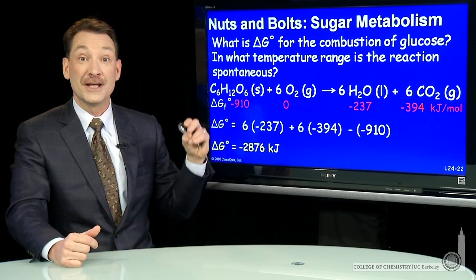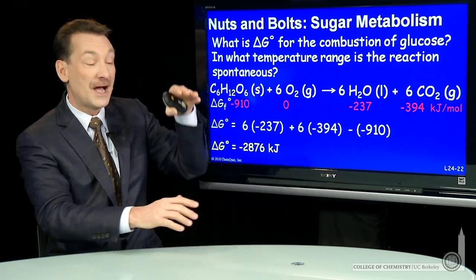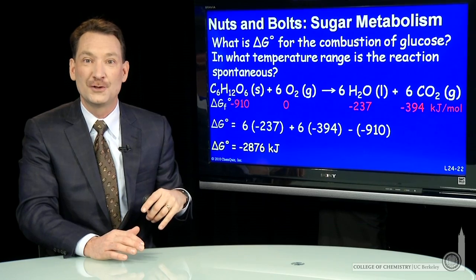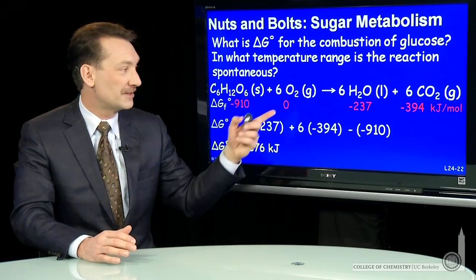So indeed, this is a very spontaneous chemical reaction. A very large amount, 2876 kilojoules, is released per mole of glucose when it's combusted in oxygen.